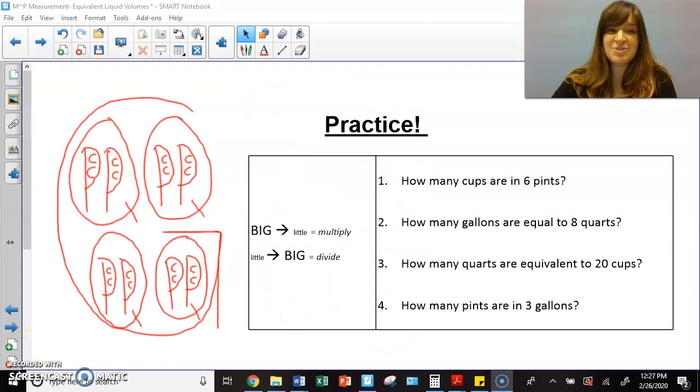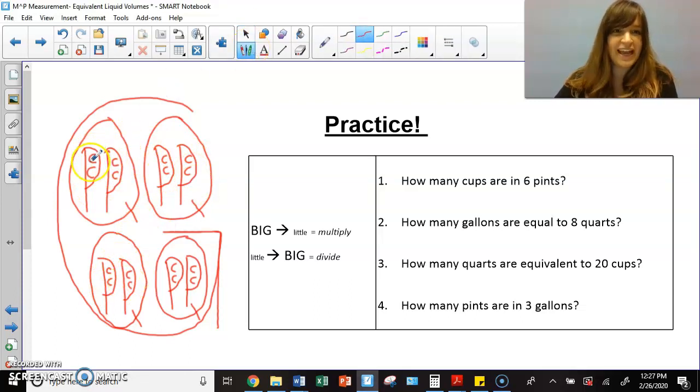So in creating this, we can now use this picture to help us convert between gallons, quarts, pints, and cups. So we can look at our picture, and if it's asking us how many cups are in six pints, I can look and I see one, two, three, four, five, six. So I'm going to go ahead and count. There's one, two, three, four, five, six, seven, eight, nine, ten, eleven, twelve. There are 12 cups in six pints.